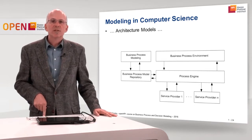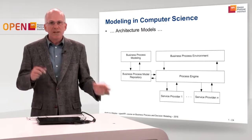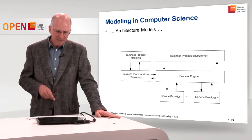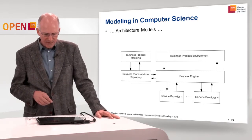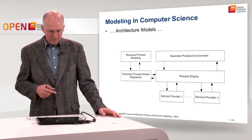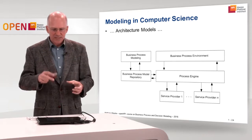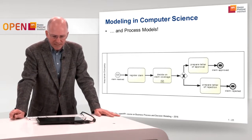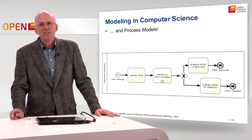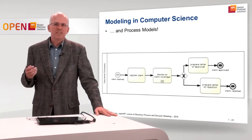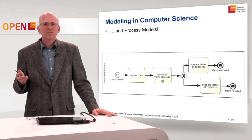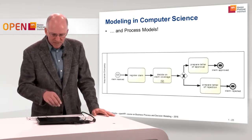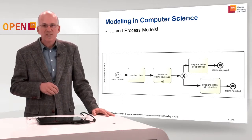Architecture models play an important role in computer science, showing the building blocks of a complex system and how these blocks interact. This picture from the BPM book shows elements like the process engine interacting with the process environment, invoking services, and using service providers. Process models are also models in computer science that simplify the complexity of the world. Business processes are very complex, so we need to abstract and concentrate on the main elements relevant for the modeling goal, as in the insurance claim example with its main activities and their coordination.